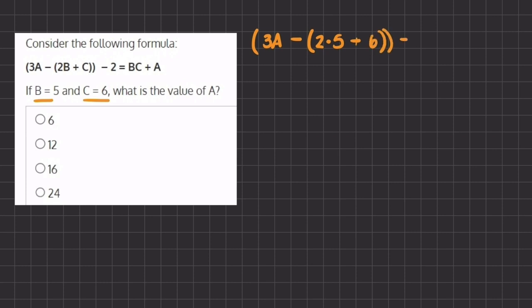So now we have minus 2 equals b and instead of b I'm going to be writing 5 times c which is 6. When we have two variables that are written right next to each other that means that they're being multiplied, plus a which is our unknown variable.